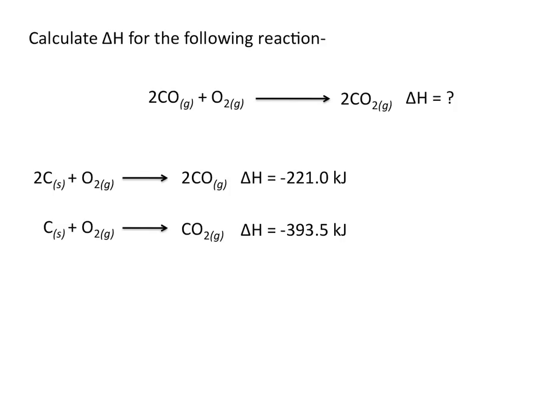So let's look at an example. Calculate delta H for the following reaction: 2 carbon monoxide plus O2 goes to 2 carbon dioxide. We'll calculate delta H for this reaction given the two reactions below and their delta H values.